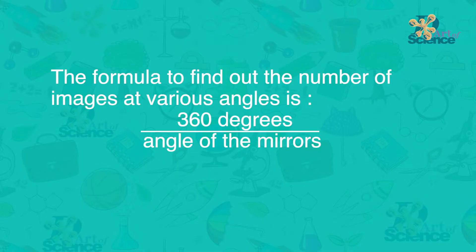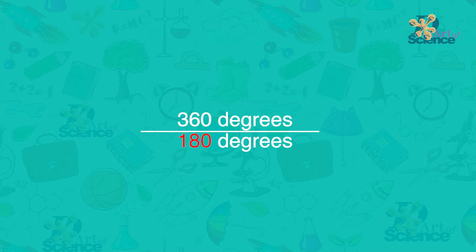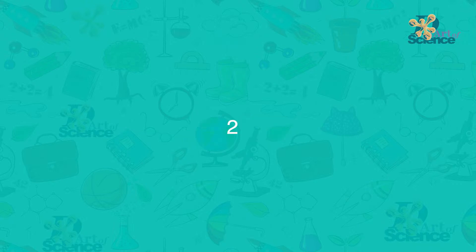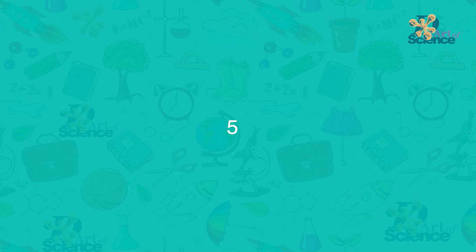So there is a formula to find out the number of images at various angles. It is 360 degrees divided by the angle of the mirror minus 1. So if the angle is 180 degrees, then it is 360 divided by 180 which is 2 and then minus 1 which means 1. That is 1 image. So if the angle is 60 degrees, then it is 360 divided by 60 which is 6. And then minus 1 means 5. That means at 60 degrees, you get 5 images.